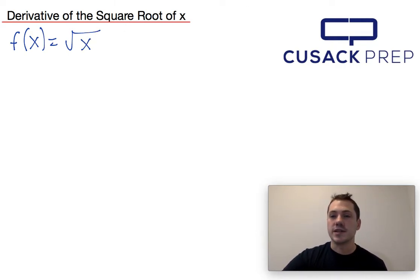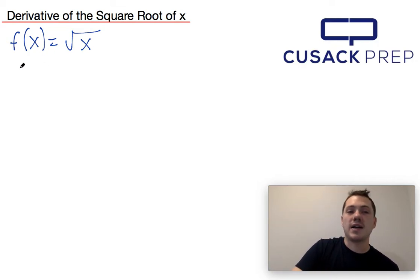And the answer is you just use a little bit of algebra followed by the exponent rule. So the little bit of algebra is just that the square root of x is the exact same thing as x to the 1 half.